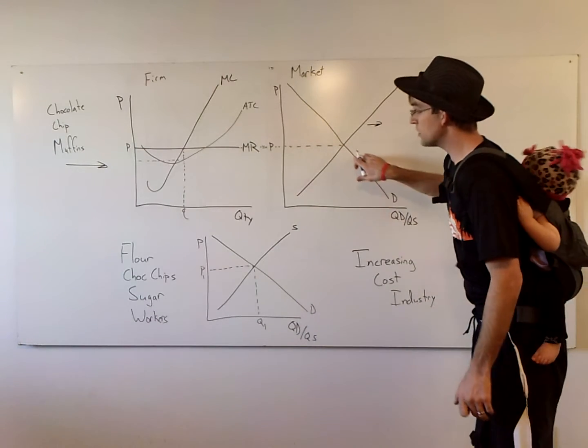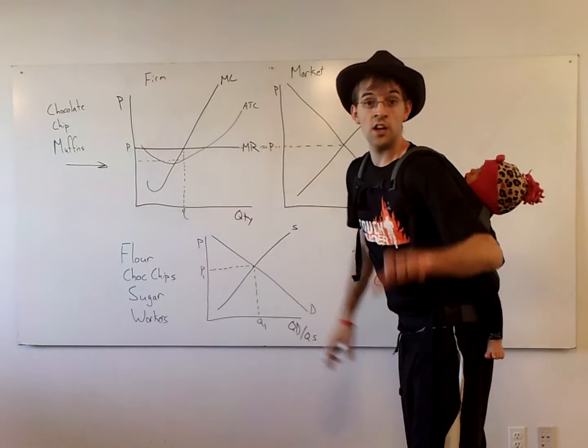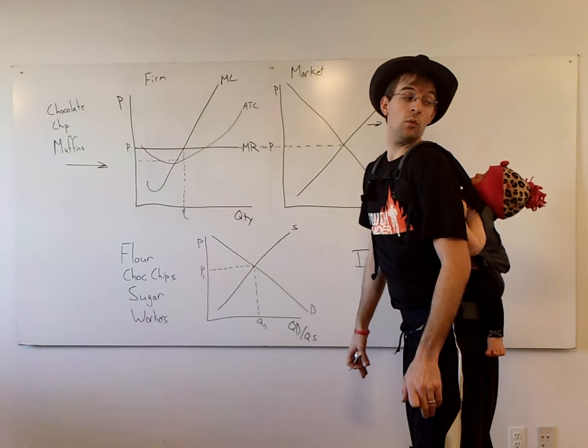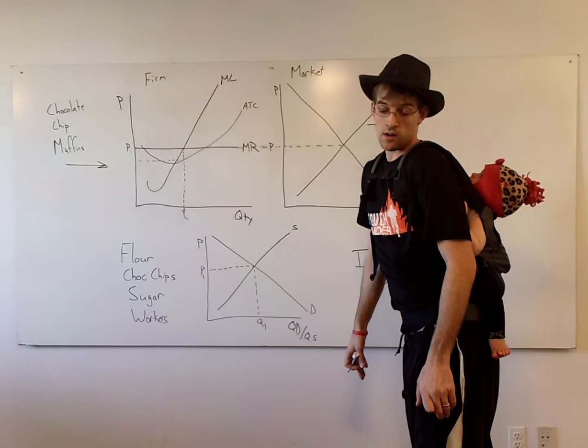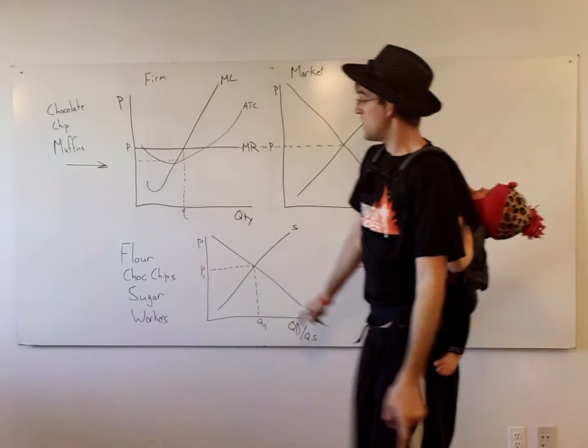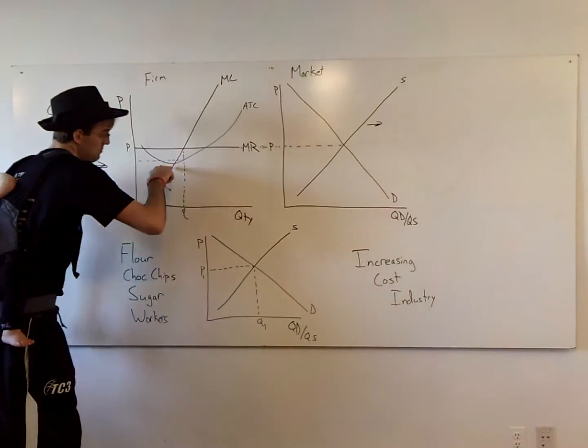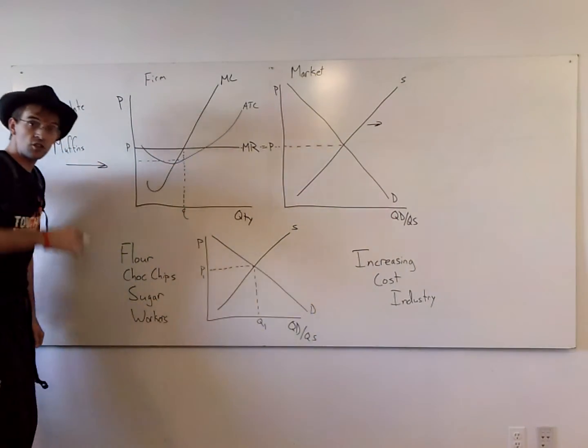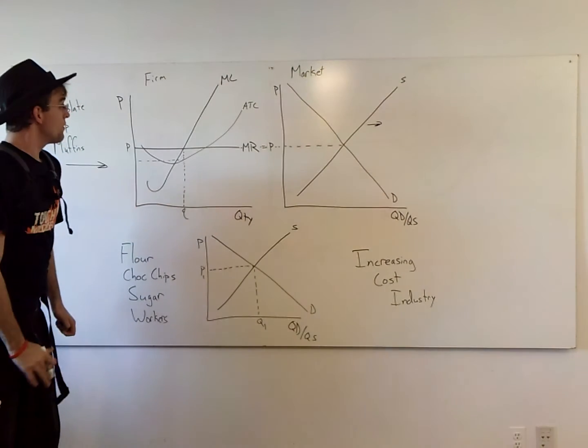And what will happen is your price will fall, and so will your MR, until we earn profits that are what, Brooke Edson? Zero. Very good. And notice, that will be when MR is at the minimum of ATC. That's your long run equilibrium break even firm graph.